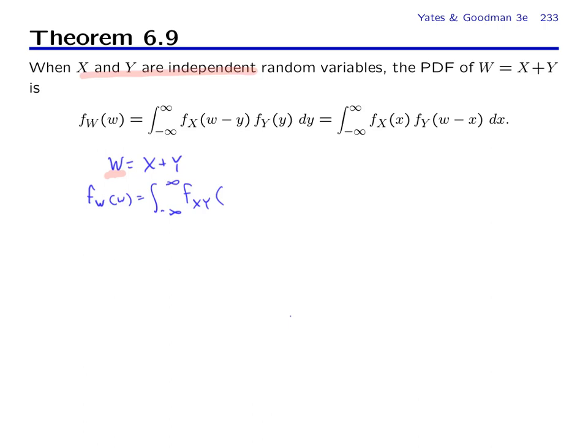So recall that the previous theorem said that the PDF of the sum w was integral minus infinity to infinity, we integrated the joint PDF of x and y over all x with y equal to w minus x. But the thing to remember is that the joint PDF of x and y factors into the product of the marginal PDFs, and this is when x and y are independent. Now we put this factorization here in for the joint PDF, and we obtain the claim of the theorem.